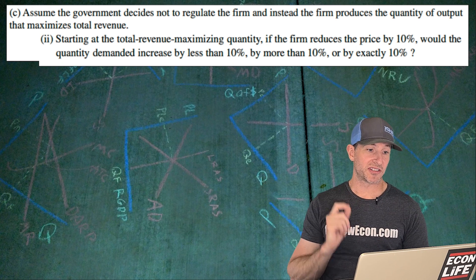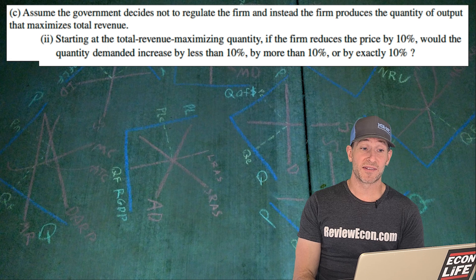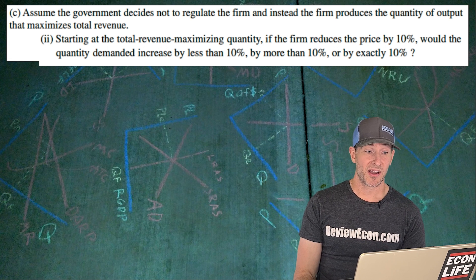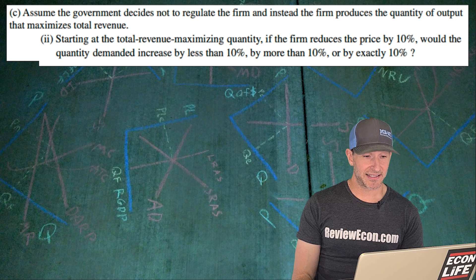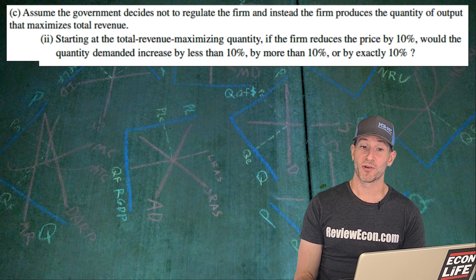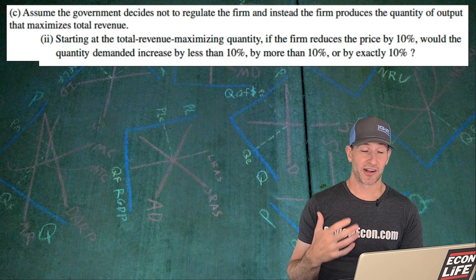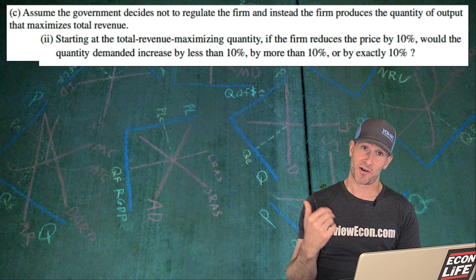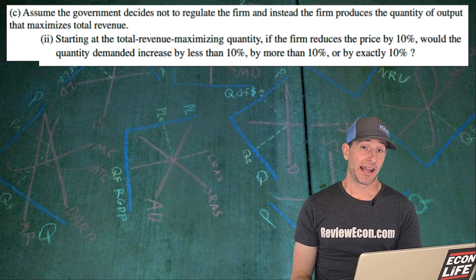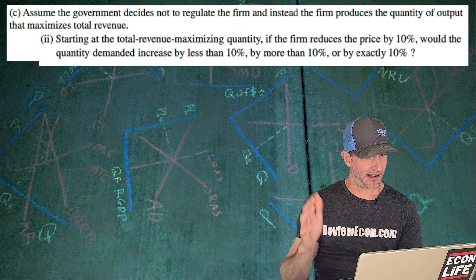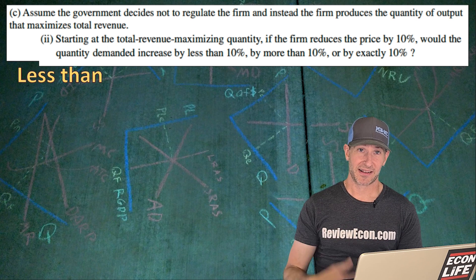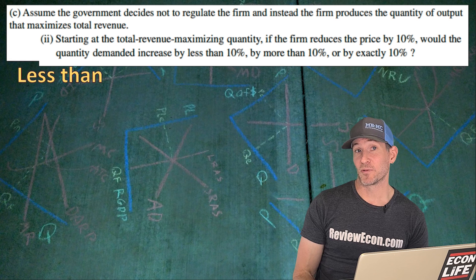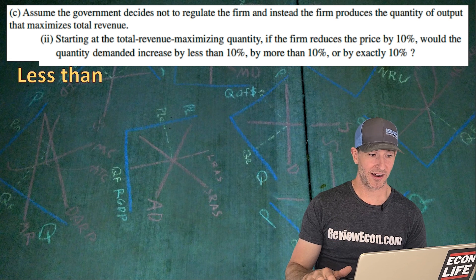So for the next part, we're going to start starting at the total revenue maximizing quantity. If the firm reduces the price by 10%, would the quantity demanded increase by less than 10%, more than 10%, or exactly by 10%? Here, once again, they are now going to be in the inelastic range of the demand curve because marginal revenue is now negative. And so I would say that, there you go, less than. That gives us a coefficient that has an absolute value less than one, so it would be inelastic.